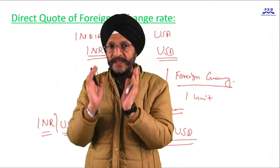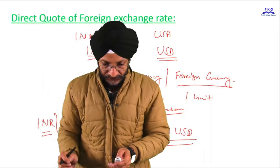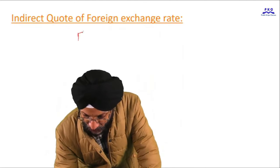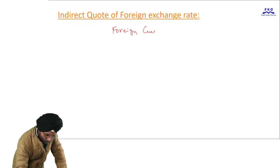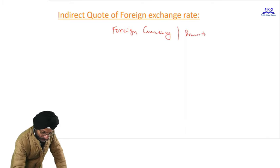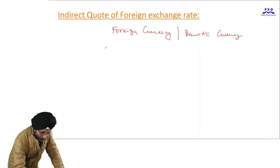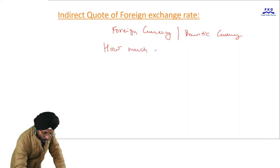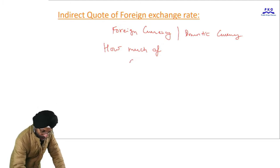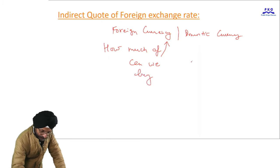We will be paying 82.83 Indian rupee to get one US dollar. Next is the indirect quote. In the case of an indirect quote, it is expressed as foreign currency over domestic currency. Here we are asking: how much foreign currency can we buy with one unit of domestic currency?